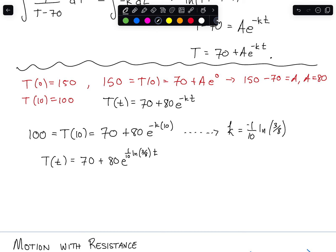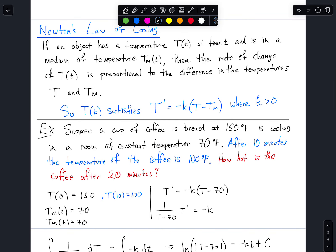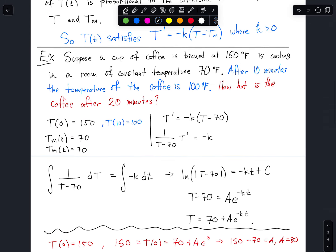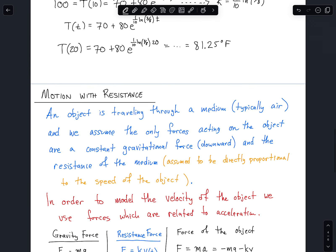All right, so we now need to figure out what is the temperature at 20 minutes. So T of 20 is equal to 70 plus 80 e to the 1 10th natural log of 3 eighths times 20. Which, after a little bit of work using a calculator, is approximately 81.25 degrees Fahrenheit. In fact, it's not approximately, it's exactly equal to 81.25 degrees Fahrenheit. All right, so that's giving us the working through this example using Newton's law of cooling where the temperature change T prime is proportional to the difference in the object temperature minus the medium or the room temperature.